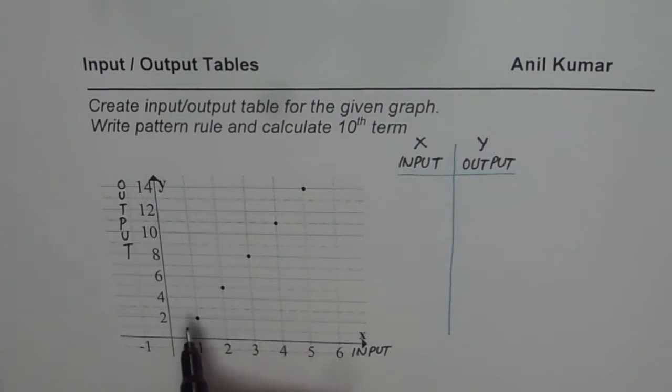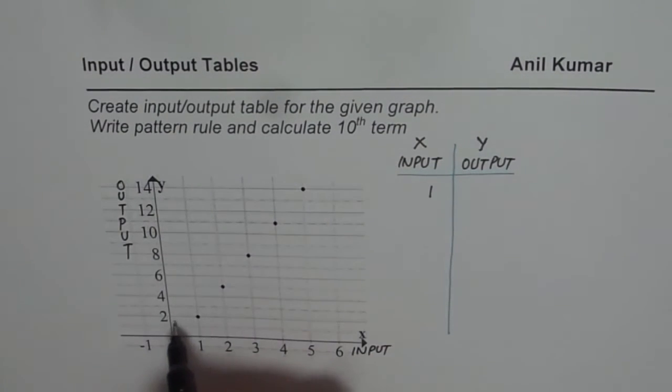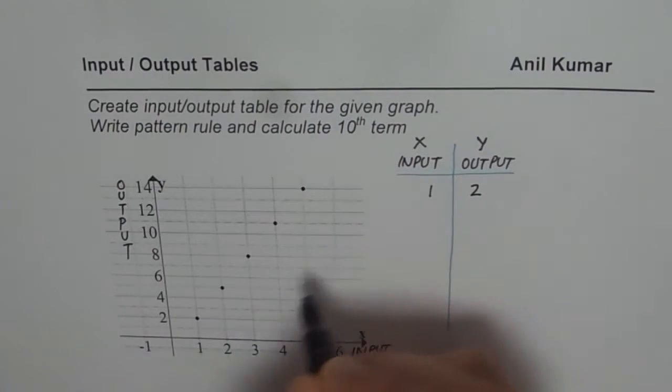Now to get the points, we are given 1, 2, 3, 4 and 5 points. Let's figure them out. At 1, input is 1, output is 2. Do you see that? So that is how you have to read.